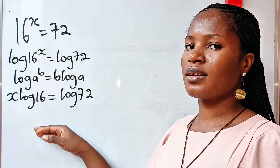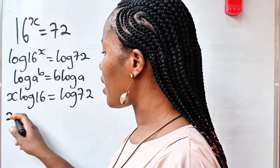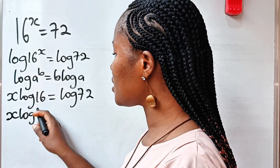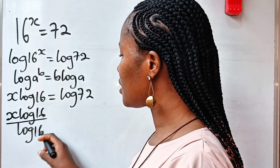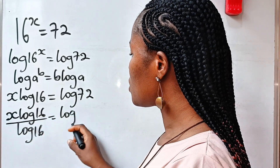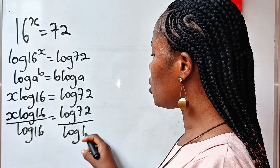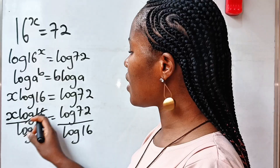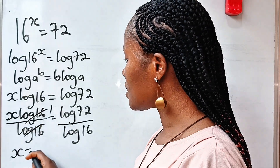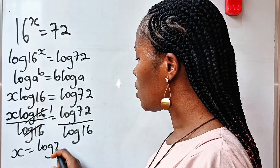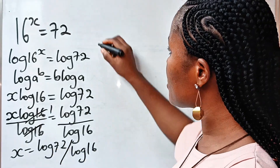Now let's divide both sides by log 16. So we have x log 16 divided by log 16, which is equal to log 72 divided by log 16. Now log 16 will divide itself to give us 1, and 1 times x gives us x is equal to log 72 divided by log 16.